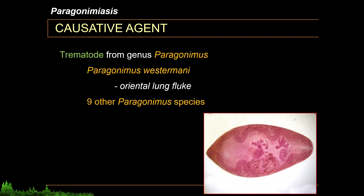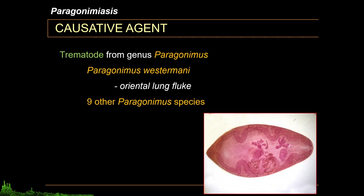Here in the Philippines, known endemic provinces include Occidental Mindoro, Oriental Mindoro, Camarines, Sorsogon, Samar, Cotabato, and Basilan.